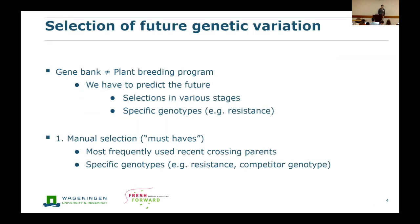Core collections are already widely used and adopted by gene banks, so there are already a lot of methods developed by gene banks which we can use. But there are also some obvious differences between gene banks and plant breeding programs. One of the main differences is that plant breeding programs evolve over time, so the genetic variation present right now is different than the genetic variation of next year and the year after that. So one important thing to make the core collection future-proof is to kind of predict the future, because we already have the future present in the breeding program in selections at various stages, but also in specific genotypes selected for specific traits, for example resistances or other nice traits. That's why we decided to have a first step to select these must-have genotypes.